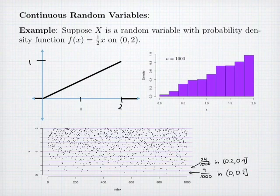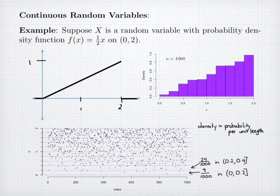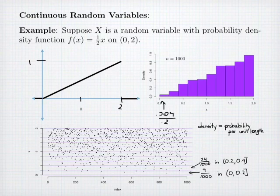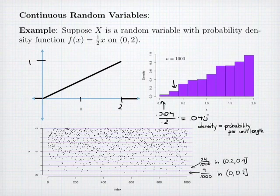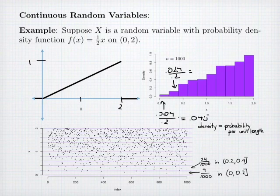Now my probability density is the probability per unit length. For the first interval, my probability was 9 out of 1,000, so 0.009, and my interval width was 0.2, giving a density of 0.045 — so the histogram has a height of 0.045 on that interval. The second interval has a probability of 0.024 and an interval width of 0.2, so dividing 0.024 by 0.2 gives a probability density of 0.12, which is the height of that rectangle.